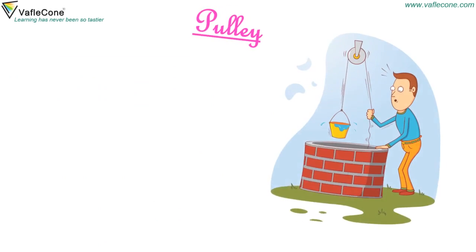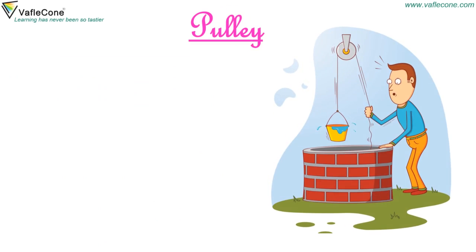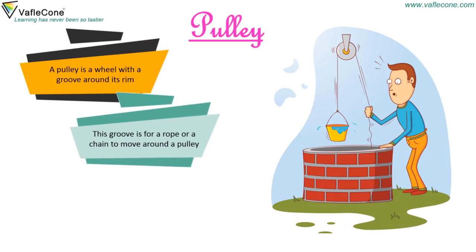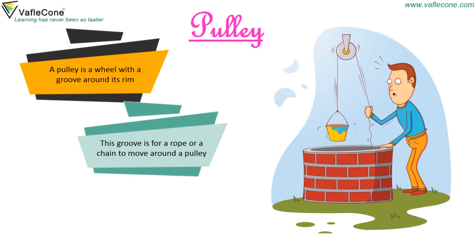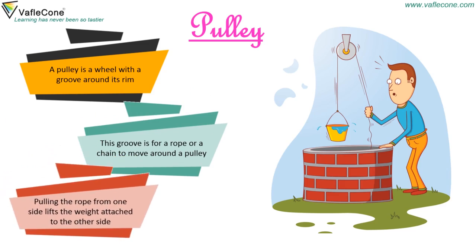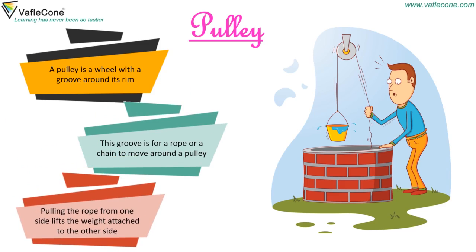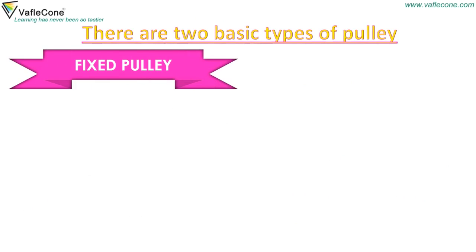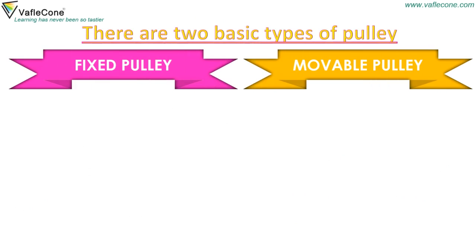A pulley is a wheel with a groove around its rim. This groove allows a rope or chain to move around the pulley. Pulling the rope from one side lifts the weight attached to the other side. There are two basic types of pulley: fixed pulley and movable pulley.